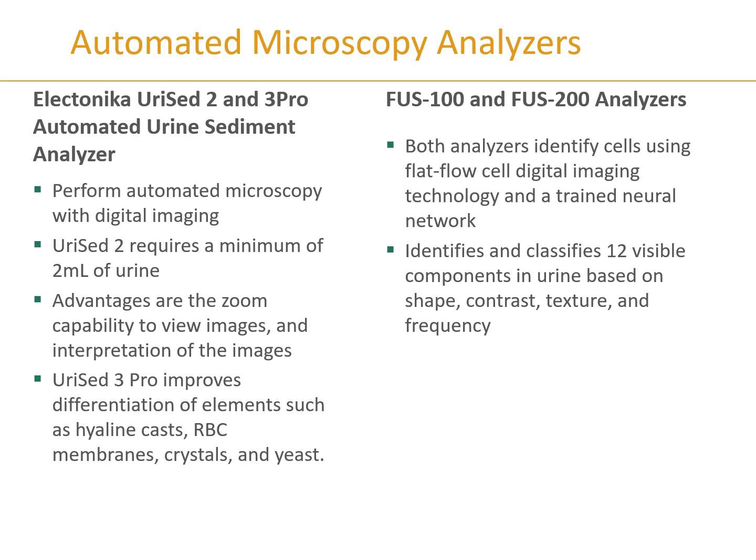The FUS 100 and 200 analyzers identify cells using flat flow cell digital imaging technology and a trained neural network — a newer category of imaging. It identifies and classifies particles into 12 visible components based on shape, contrast, texture, and frequency of the particular particulate in the urine sample.